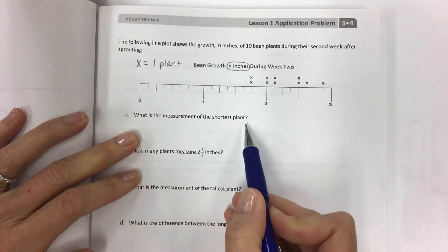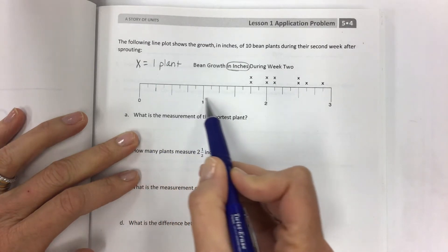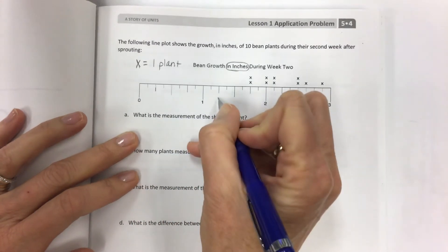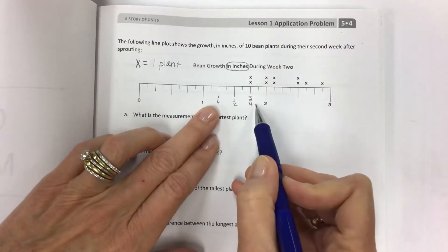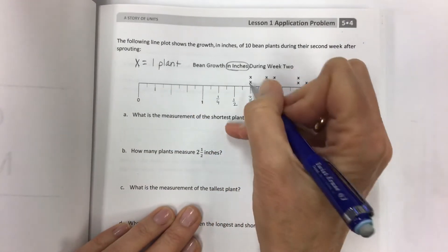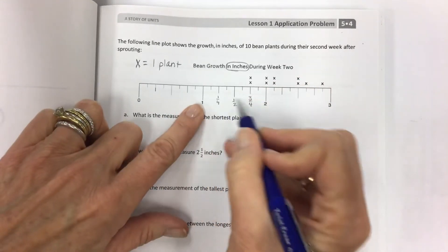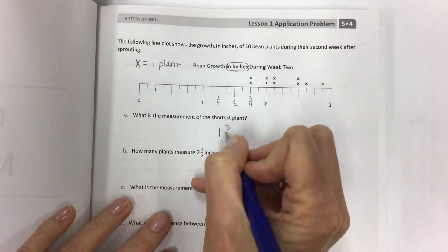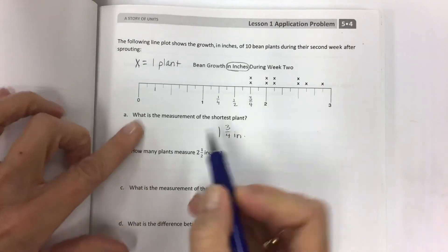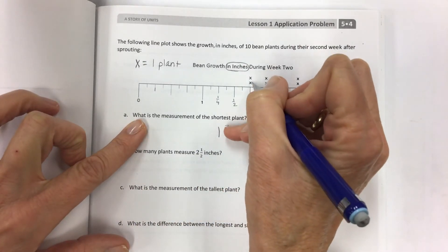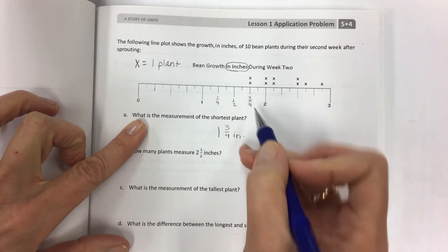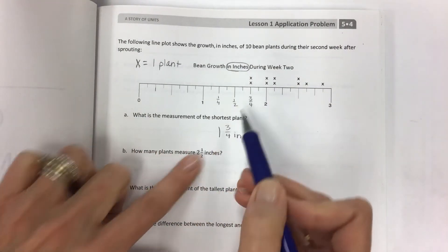What is the measurement of the shortest plant? So this is really easy. Look, count by your number line. Count by fourths. Look at where it falls. It's one and three fourths inches. That's the measurement of the shortest plant. There are two of these plants that are the shortest. But it doesn't matter. We just need to know this measurement.